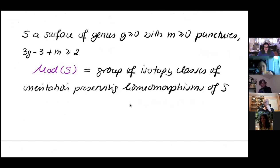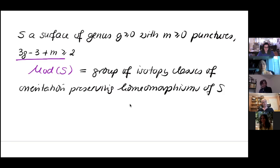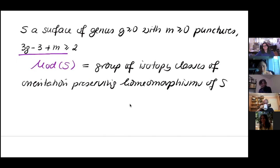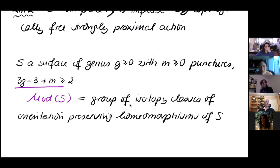Recall something we have seen already several times before: we take the mapping class group. We take a surface S of genus g at least zero with m punctures, requiring that the complexity is large enough, meaning 3g minus 3 plus m is at least 2, which rules out four-punctured spheres and once-punctured tori. We look at the mapping class group — the group of isotopy classes of orientation-preserving homeomorphisms of the surface.